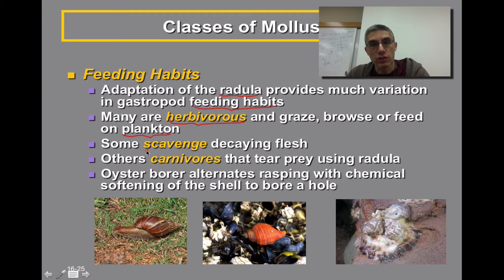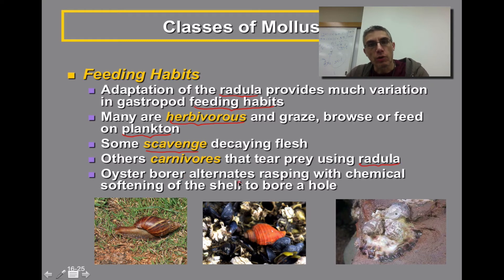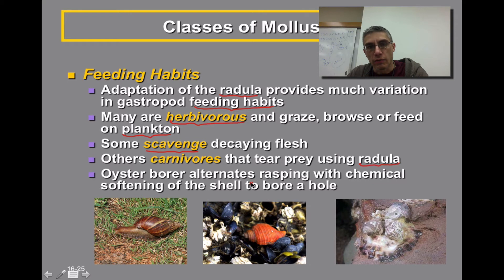There are some out there that will scavenge, meaning they feed off of decaying flesh of animals that have died. There are some that are considered carnivores and will tear into their prey using the teeth found on the radula. The oyster borer actually will alternate between a rasping mechanism with the radula and use of a chemical softening of the shell to bore a hole — it rasps for a period of time, then produces a chemical that allows it to actually penetrate the shell of its victim.